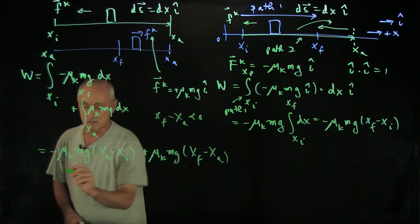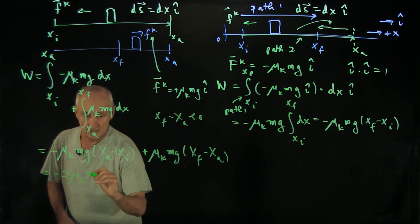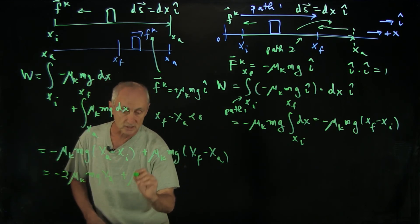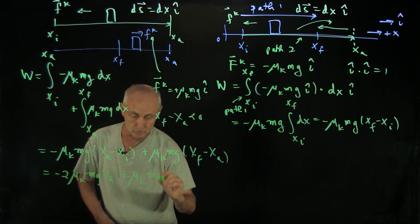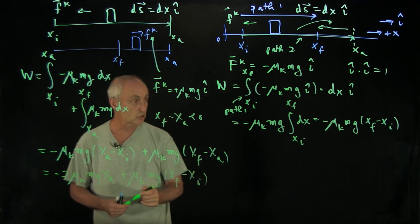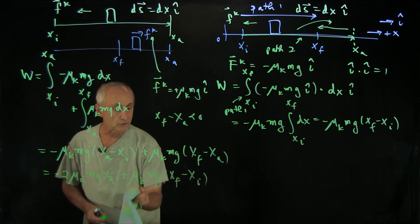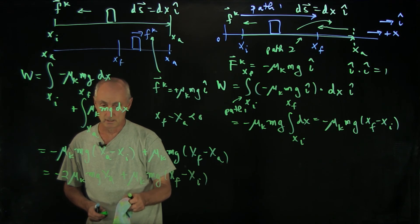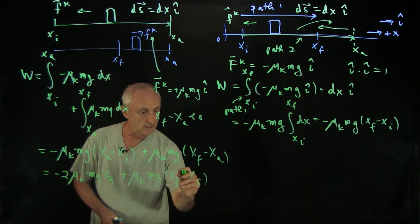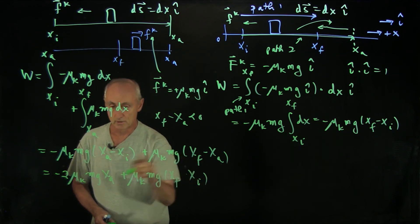And so what we see here is that we have two pieces. So minus 2 μ_k mg x_a, and then we have that other piece, μ_k mg (x_final minus x_initial). Hang on, this is actually a plus sign.